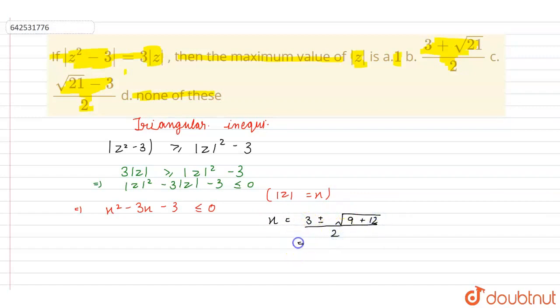This equation now becomes x minus 3 plus under root of 21 upon 2 into x minus 3 minus under root of 21 upon 2 less than or equal to 0.